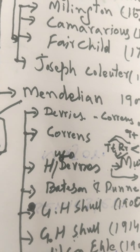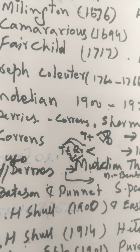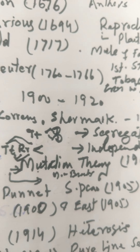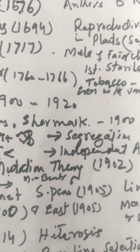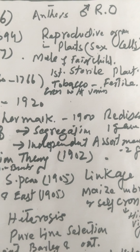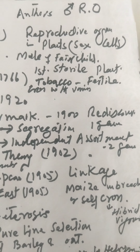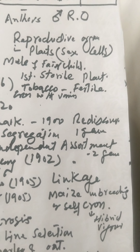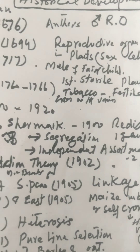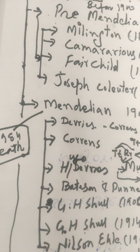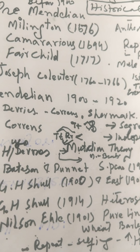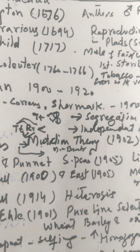Next is Joseph Koelreuter, spelled C-O-L-E-R-U-T-E-R, who worked from 1762 to 1766. He worked on tobacco plants, crossed them, and created the first fertile hybrid in the tobacco crop. Next is the Mendelian Era, which starts from 1900 and ends in 1920.